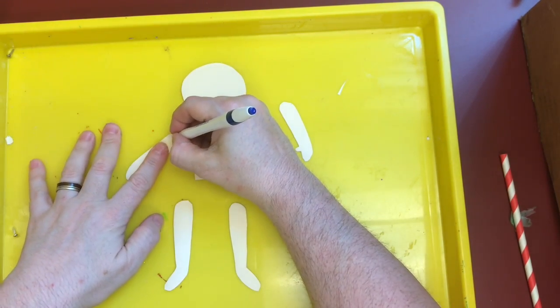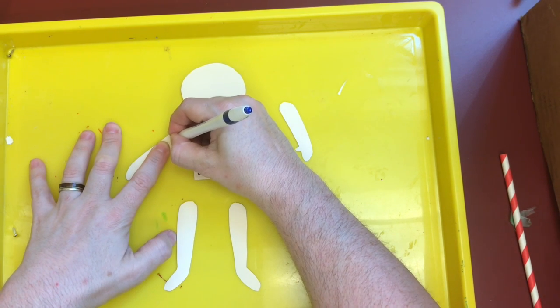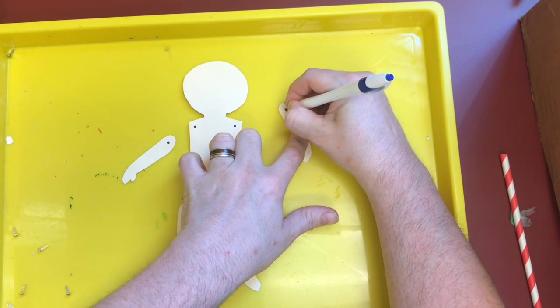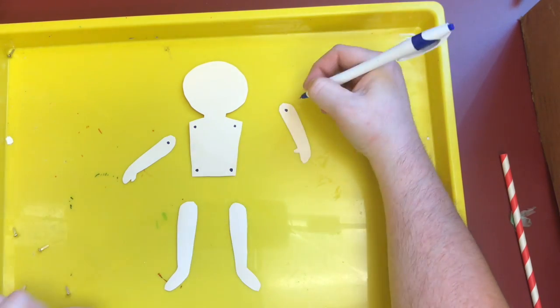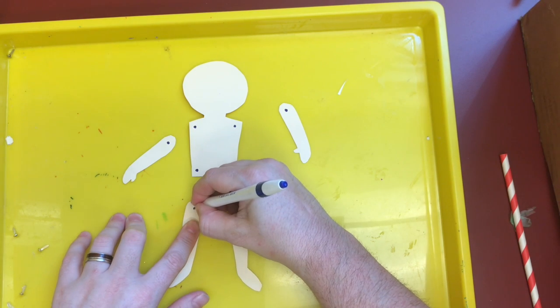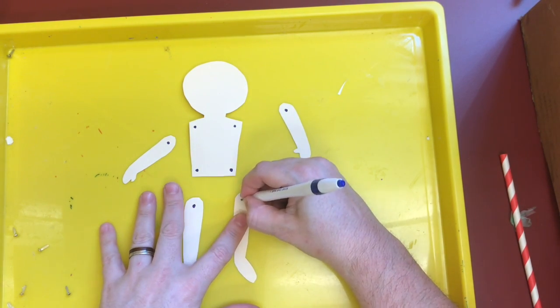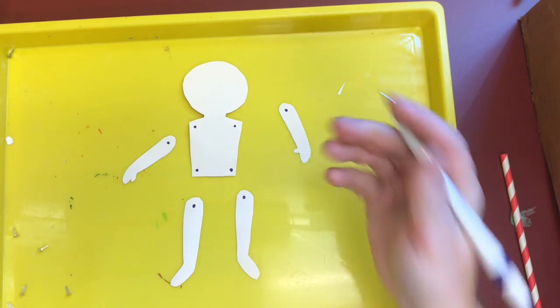And then we're going to do a dot on the end of each arm. Again, we don't want it to be too close to the edge because we don't want it to rip. And a dot on each leg. Ta-da!